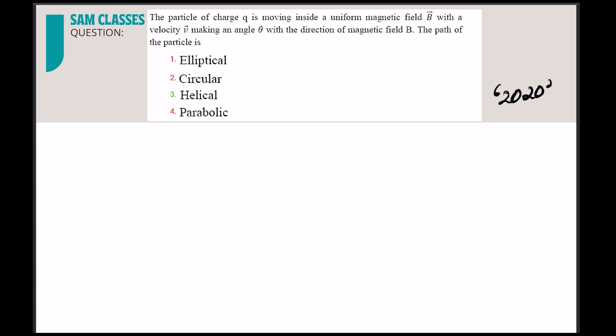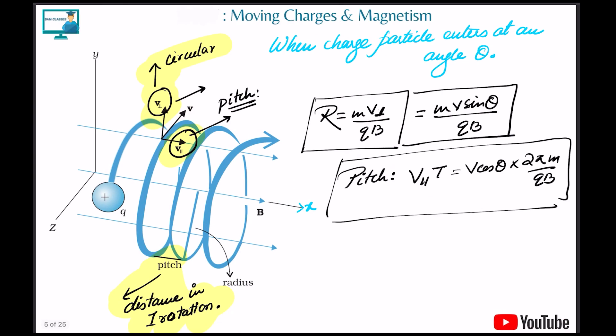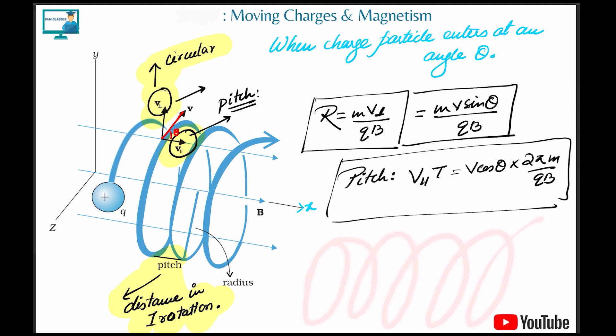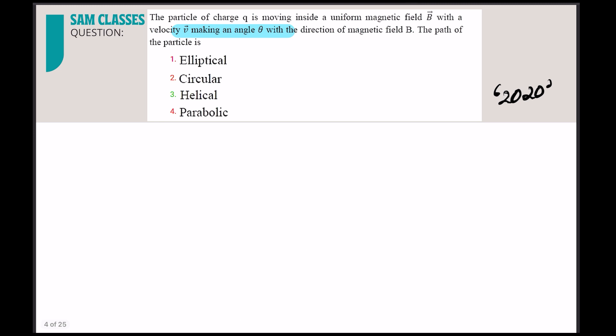Next question: a particle of charge q is moving inside a uniform magnetic field with velocity making an angle theta. When a particle moves at angle theta, we break the velocity into two components — v-perpendicular and v-parallel. The v-parallel component causes motion along x, while v-perpendicular causes circular motion. Combined, the particle traces a helical path.